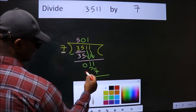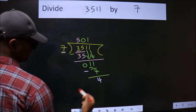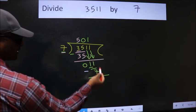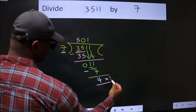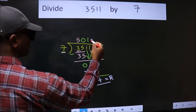Now we subtract. We get 4. No more numbers to bring down, so we stop here. This is our remainder. This is our quotient.